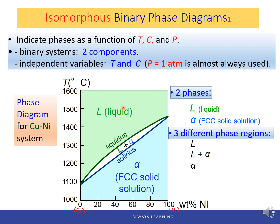The liquid L is a homogeneous liquid solution composed of both copper and nickel, extending from 0% to 100% nickel above the liquidus line. The alpha phase is the substitutional solid solution of copper and nickel with FCC crystal structure. Below the solidus line, copper and nickel are mutually soluble in each other in the solid state for all compositions, so only one solid solution phase exists.